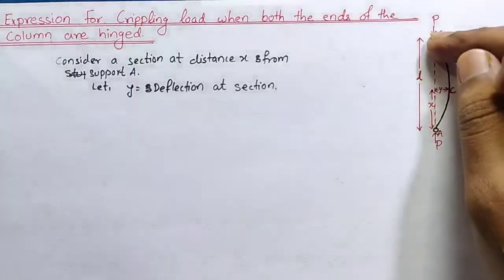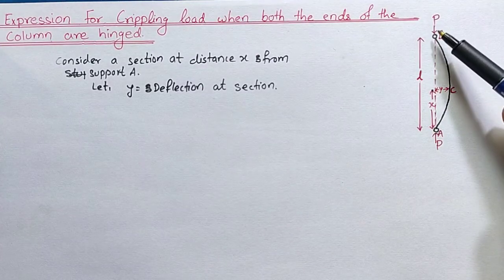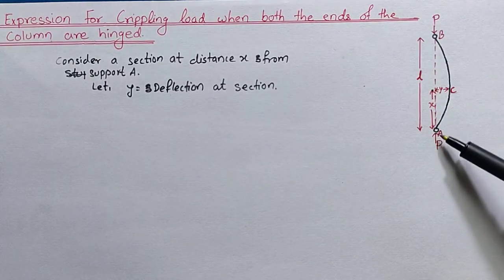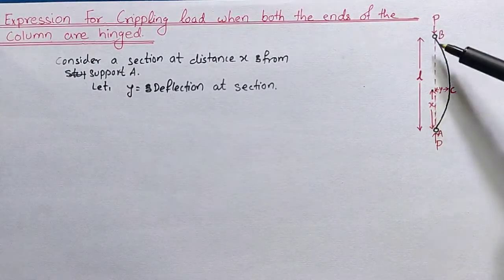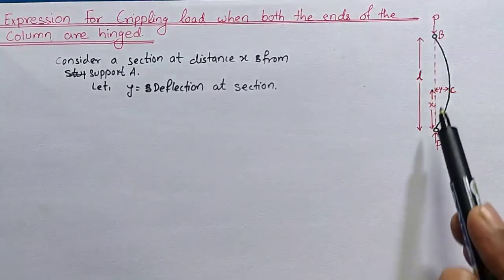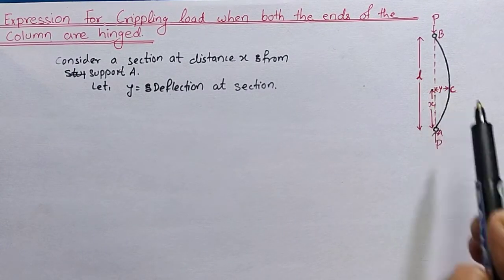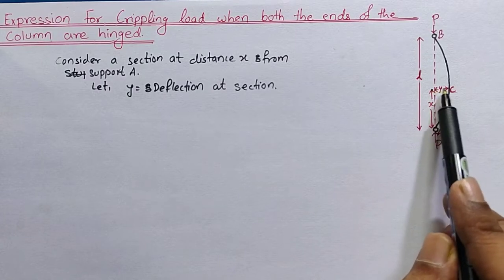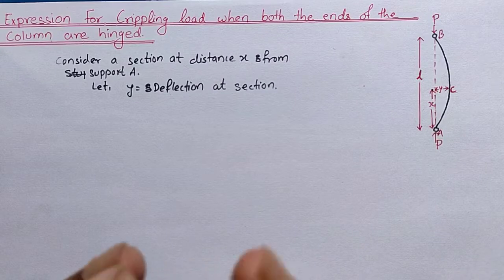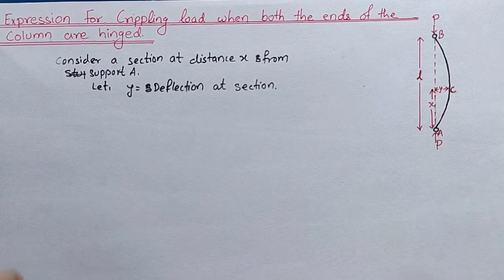We have a column AB which is deflected along section ACB due to the crippling load P acting at point B, with the same load reacting from support A. We have considered a section at distance x from support A, and at that section the deflection is y. We also need to understand the sign convention while deriving the expression for the crippling load.